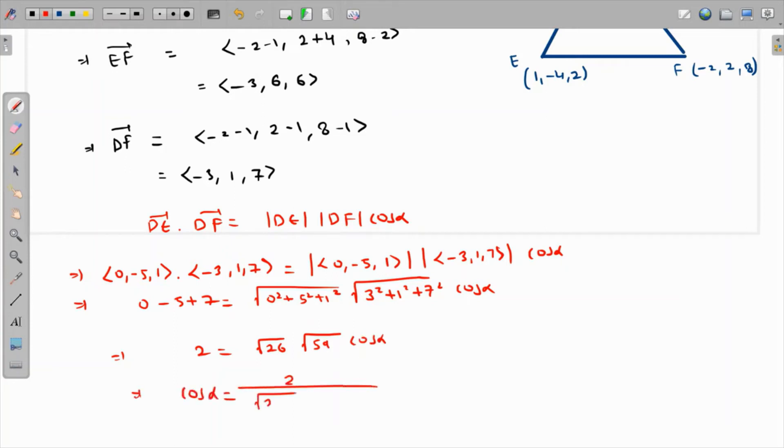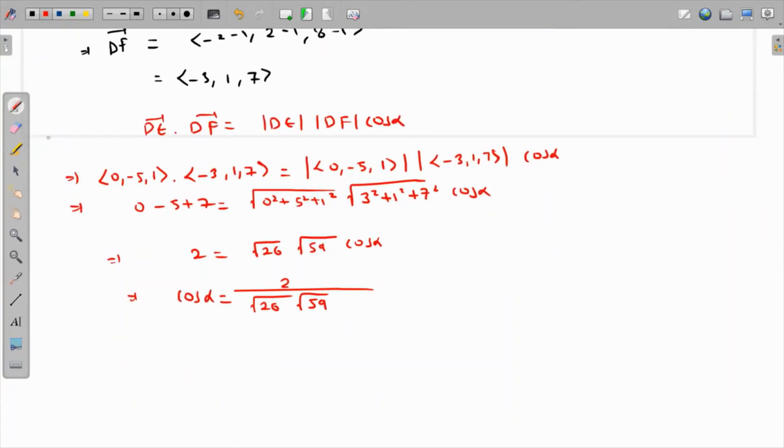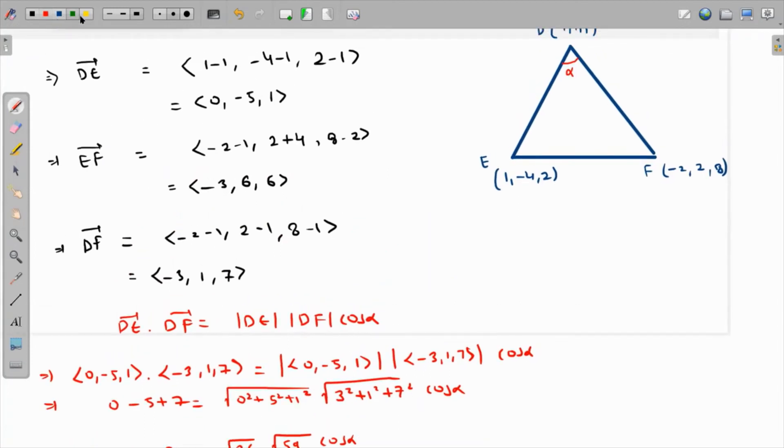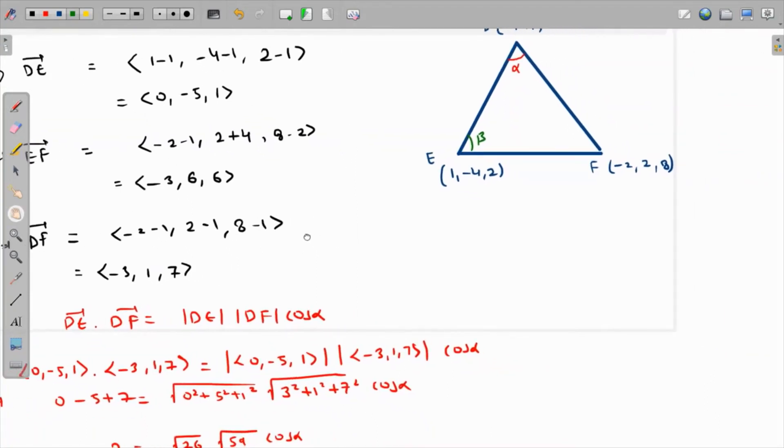If you rearrange this, cosine of alpha will be 2 over root of 26 times root of 59. Taking the cos inverse of this value comes out as close to 87 degrees. Up to two decimal places, that is 87.07 degrees.